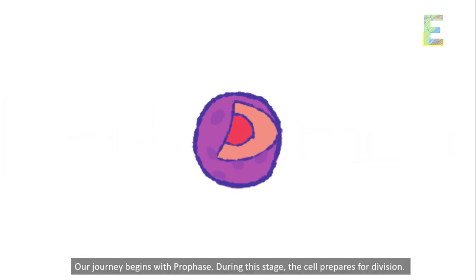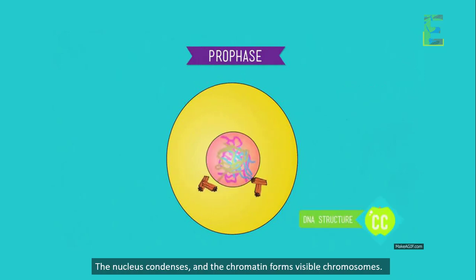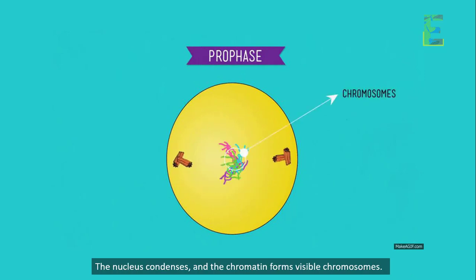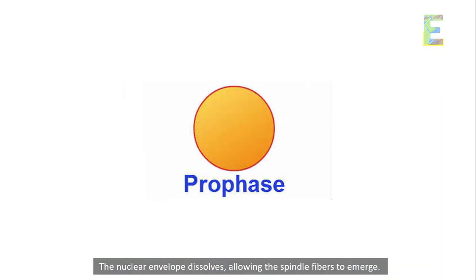Our journey begins with prophase. During this stage, the cell prepares for division. The nucleus condenses, and the chromatin forms visible chromosomes. The nuclear envelope dissolves, allowing the spindle fibers to emerge.